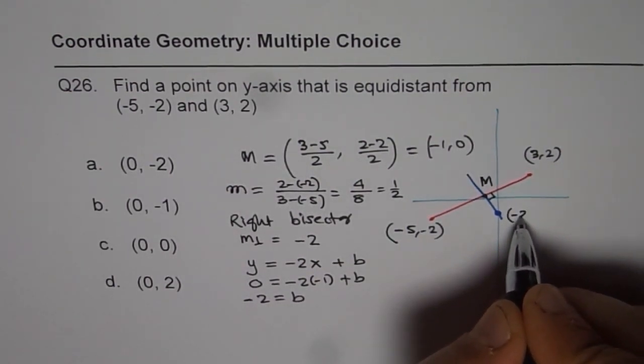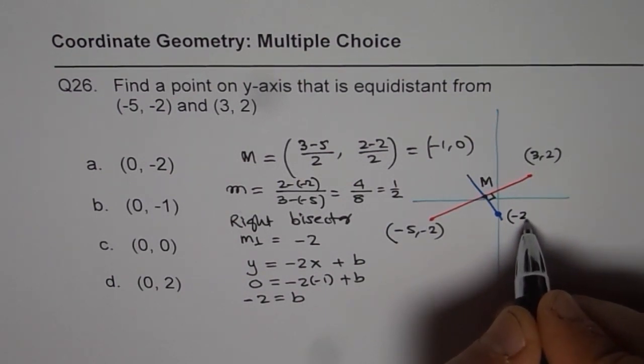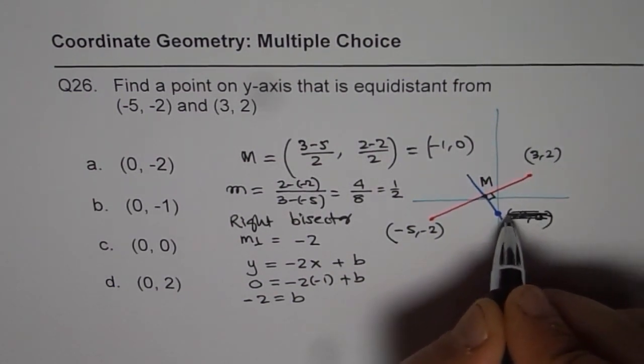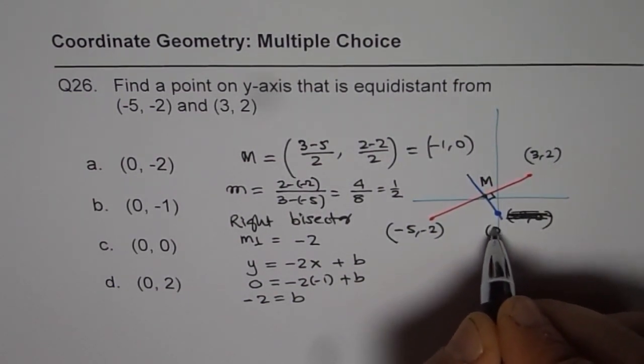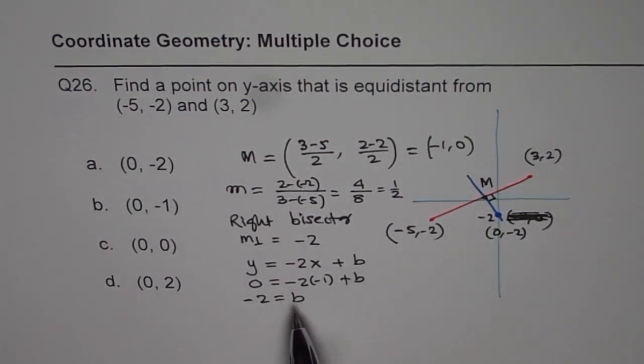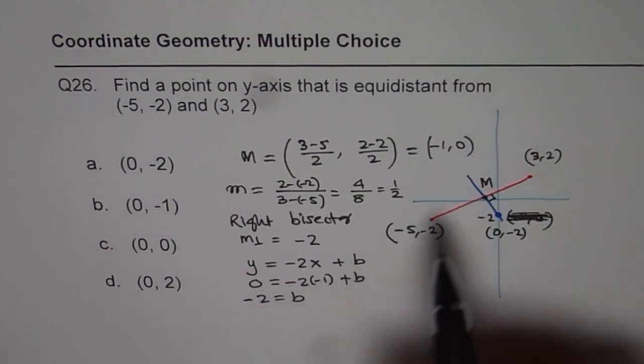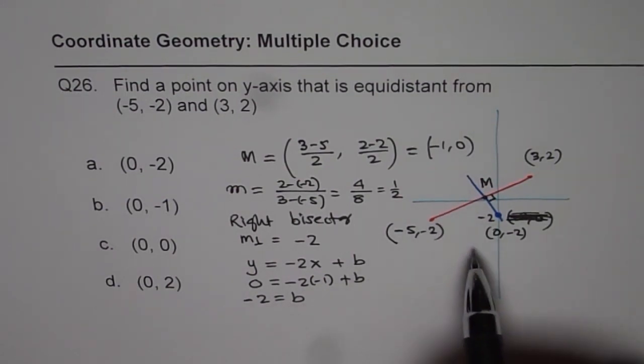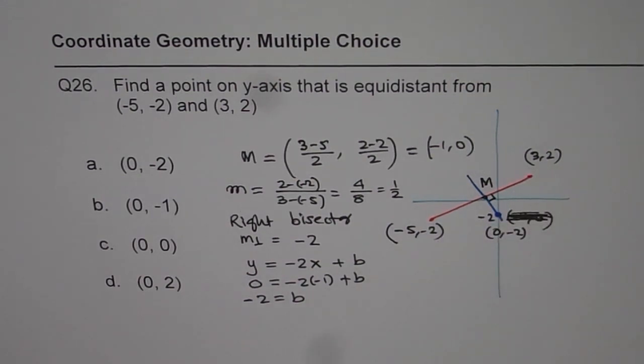So this point is -2 for us. So -2... sorry, the y value is -2, so I should write (0, -2). So the y value is -2 for us. So that is how we can find the point on y-axis which is the same distance away from the given two endpoints.